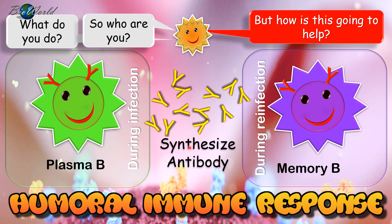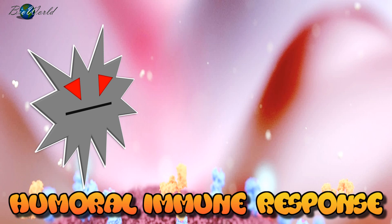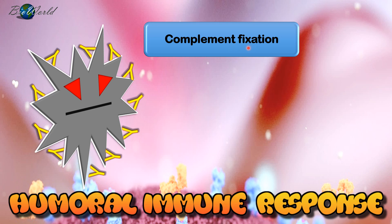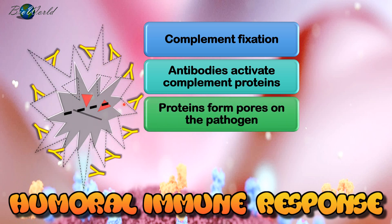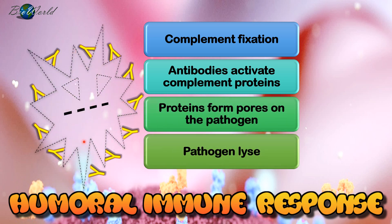Now how does antibody help macrophage carry out its function? The antibodies help the immune system as well as the macrophage in four different ways. The first way is called complement fixation. This is when the antibodies bind to the epitopes on the surface of the pathogen and activate a set of proteins called the complement proteins. These proteins then will form pores on the surface of the pathogen leading to pathogen lysis. The fragments produced from the lysis of the pathogen will then be digested by the macrophage.